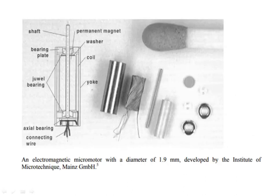Micro mechatronics is the technology that involves the design and manufacture of mechatronics products with dimensions in the range of 1 micrometer to 1 millimeter. This figure shows an electromagnetic micromoteur with a diameter of 1.9 millimeters, developed by the Institute of Microtechnique, Germany.